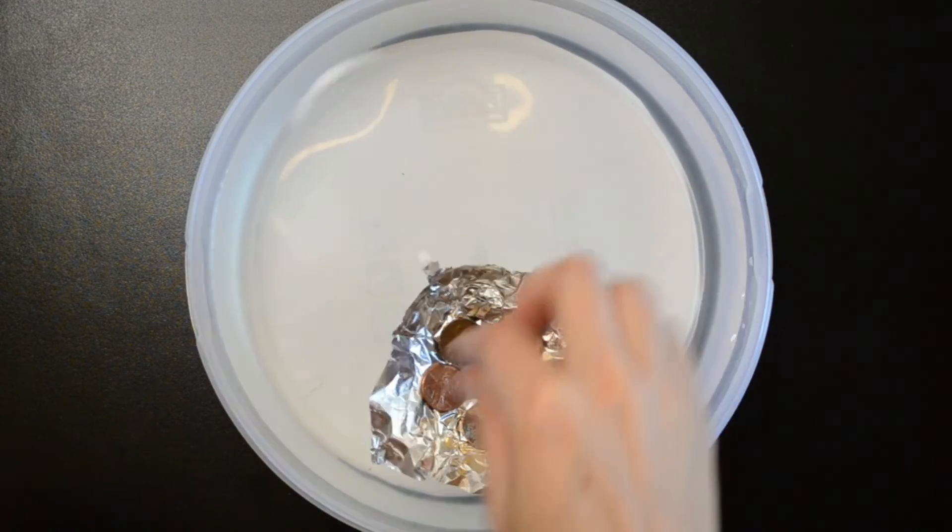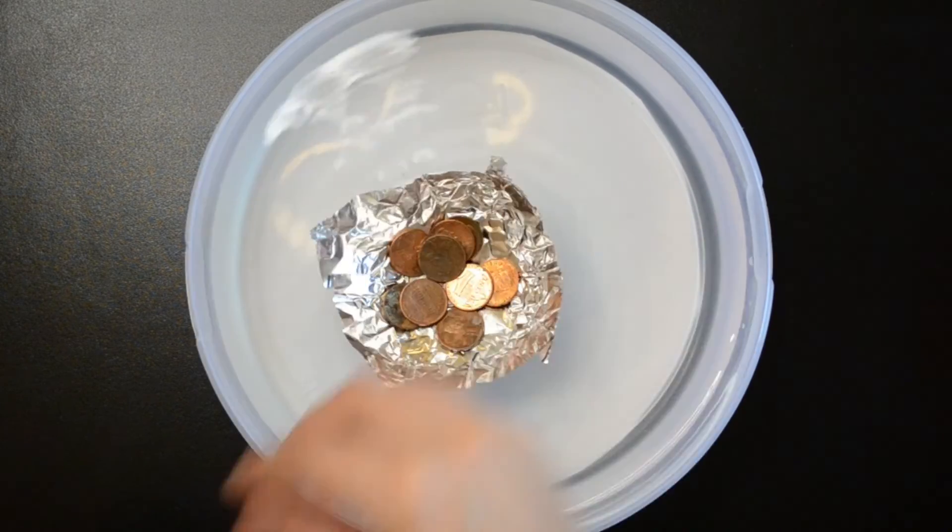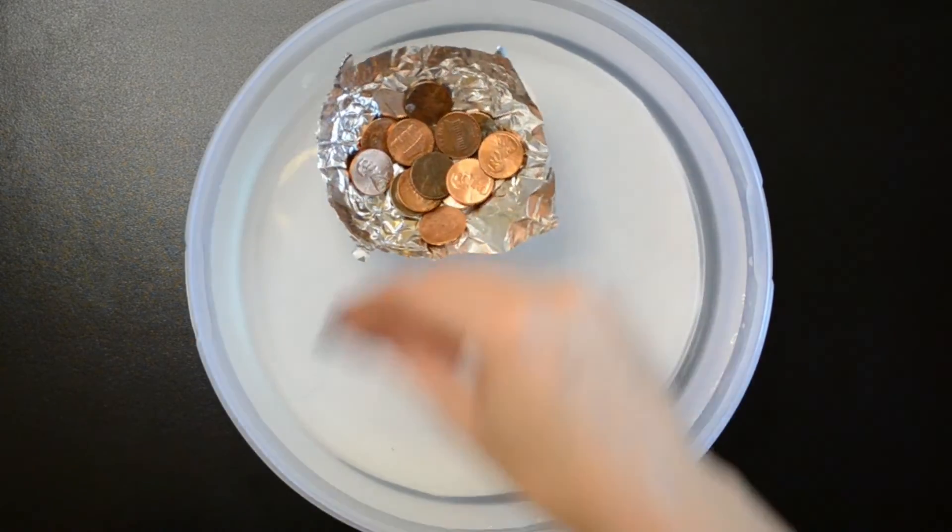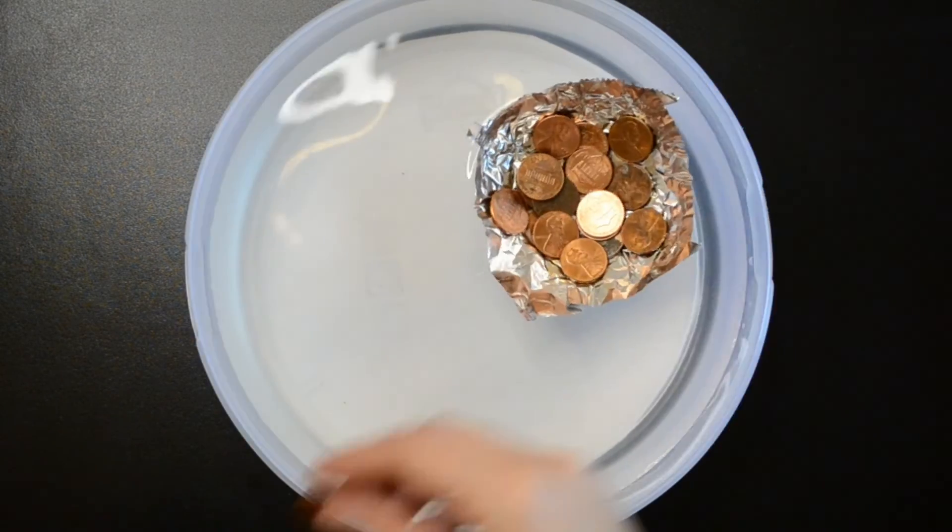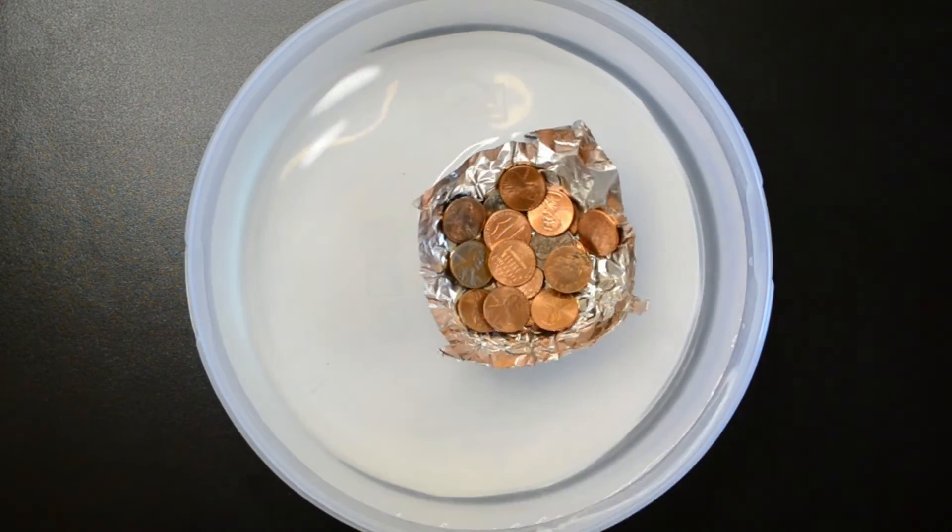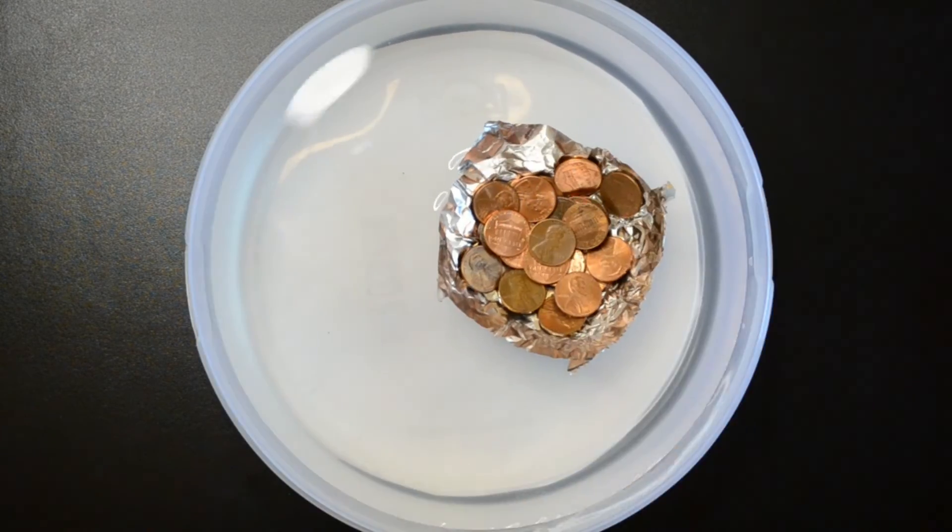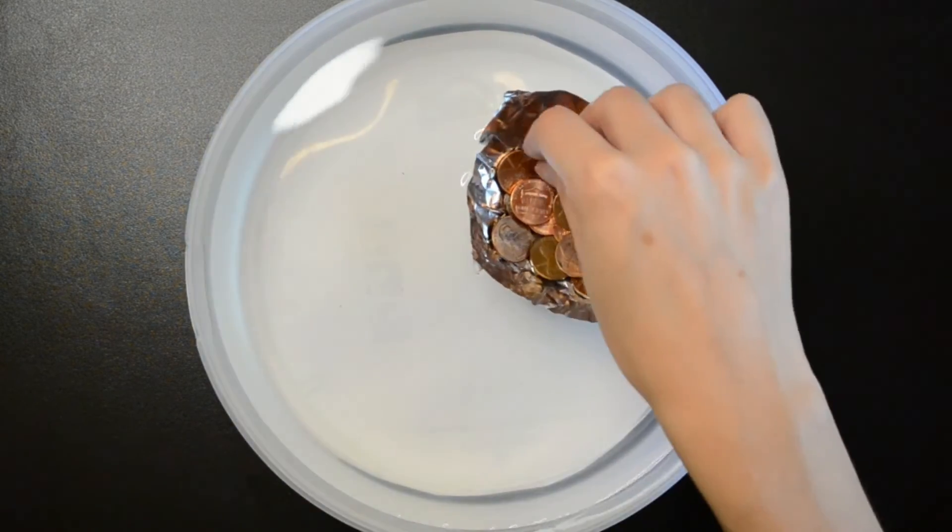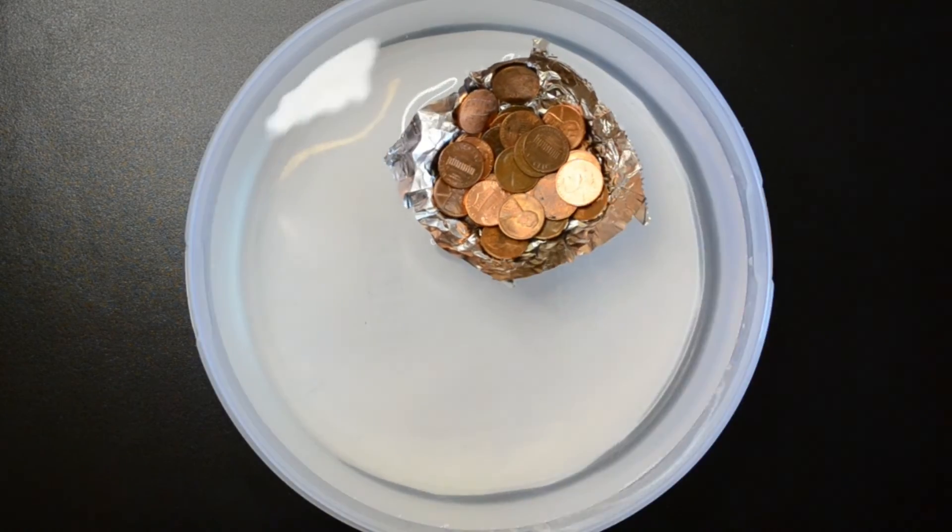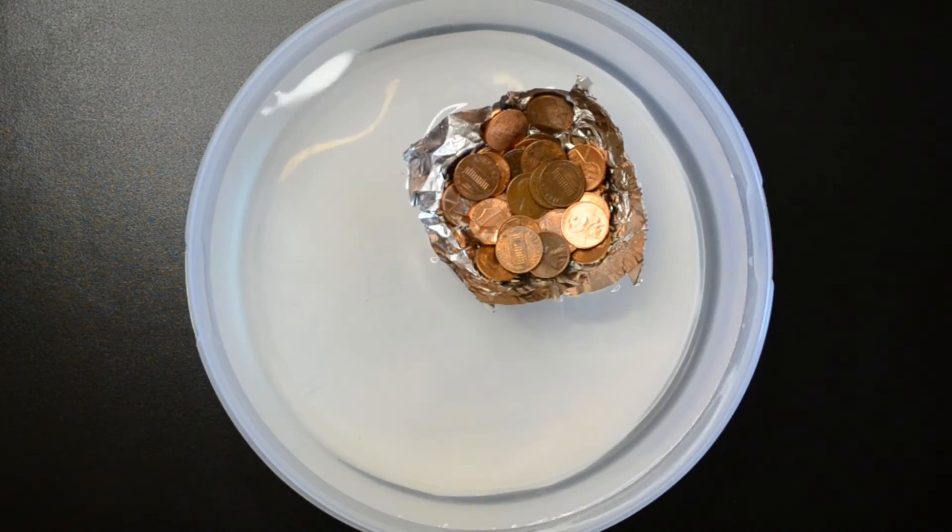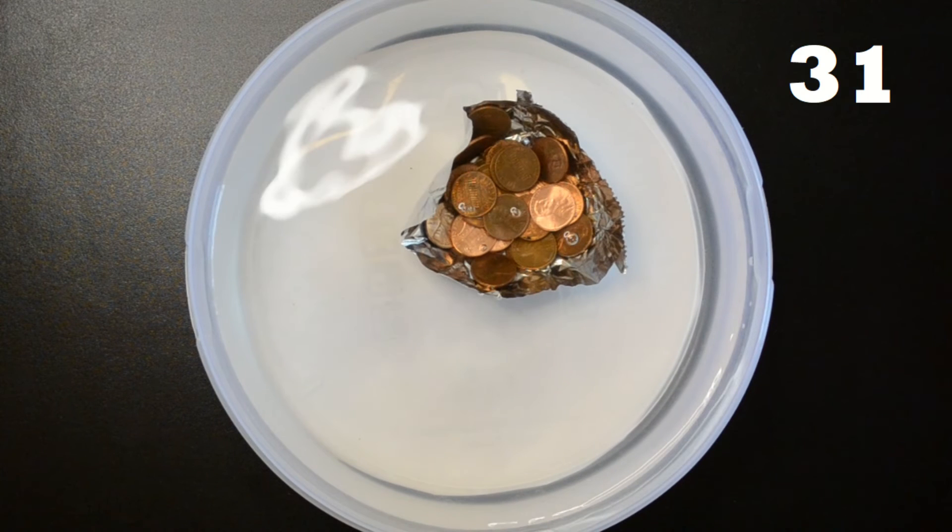I'm trying to load the pennies as symmetrically as possible but they kind of keep falling down so it's a little difficult to do that. We get to 31 pennies and then it sinks on 32. So both the sphere and the cube had more pennies than we predicted and I mentioned that this is due to surface tension so let's look at that.